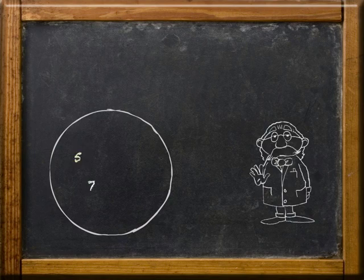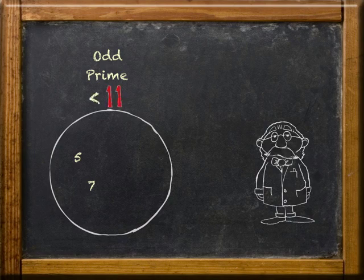The left circle has the numbers 5 and 7. We know they are both odd and prime numbers. They are also less than the next prime number, which is 11. They could also be factors of 35, but let's keep it simple right now.